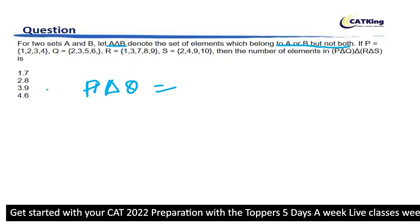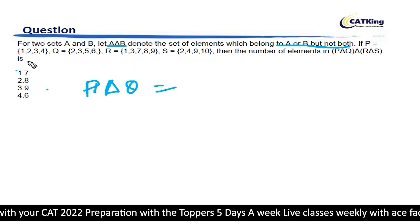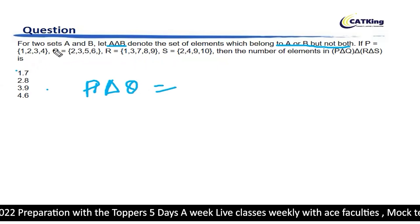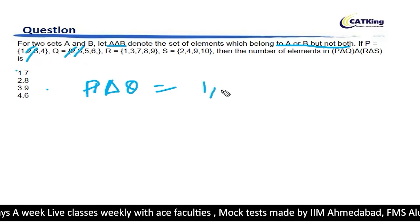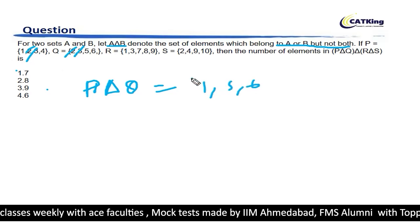You have to check what elements are in P or Q but not both. 2 and 3 are in both, so these will not feature here. So it becomes 1, 5 and 6.